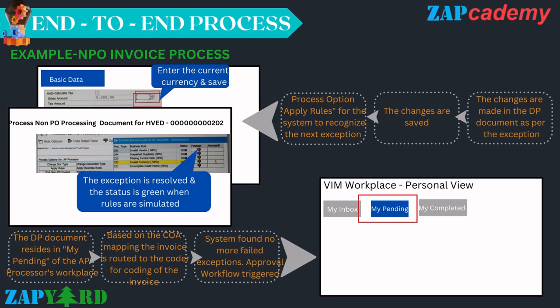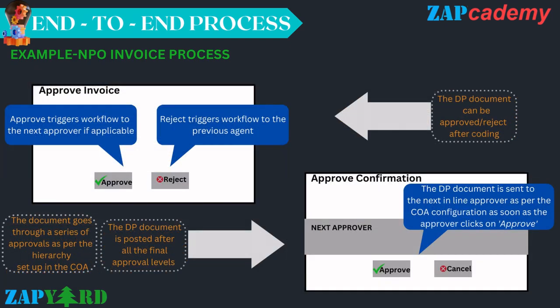All DP documents reside in My Pending of the AP processor's workplace. Based on COA mapping, the invoice is routed to the coder for coding. If the system finds no more exceptions, the approval workflow gets triggered. Once triggered, the approver must either approve or reject the invoice. If approved, the workflow triggers to the next approver (if applicable), fetched via COA configuration. If the approver clicks reject, the workflow is triggered back to the previous agent. The DP document can be approved or rejected after coding at any stage.